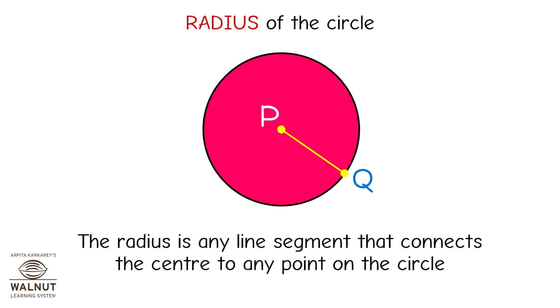The radius is any line segment that connects the center to any point on the circle. We can draw many lines from the center and all these lines are of the same length.